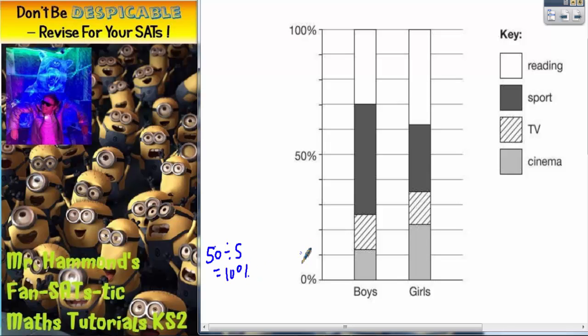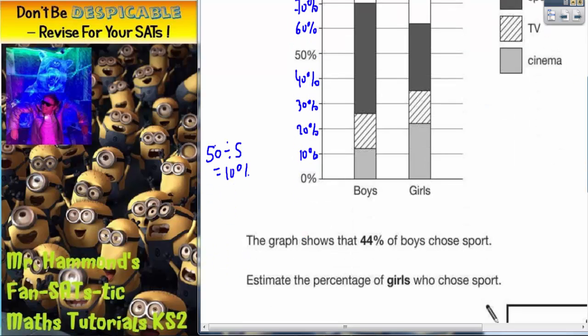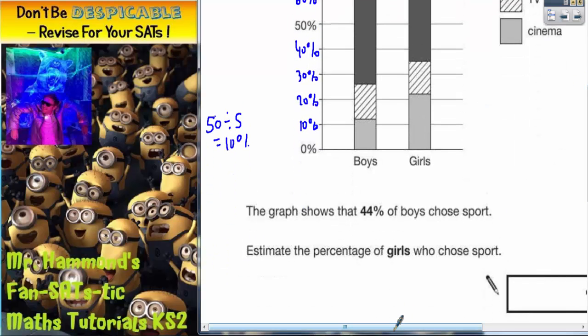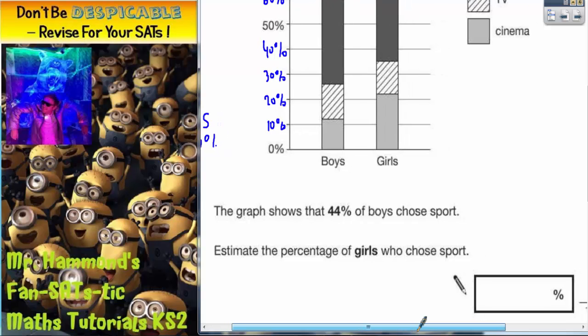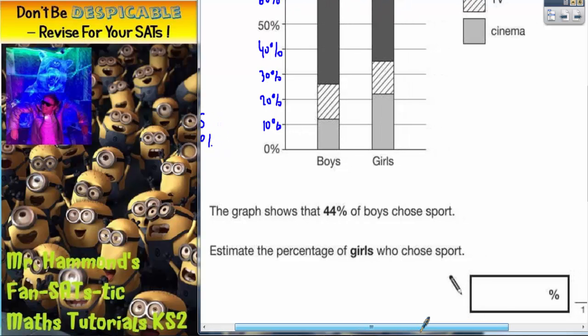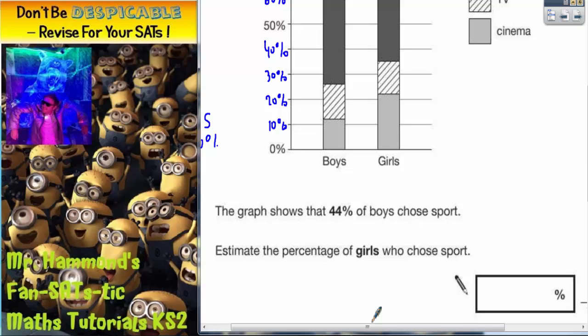So, the first gap must be 10%, then 20%, 30%, 40%. We've already got 50%, so then 60%, 70%, 80%, 90%, and 100%. Let's scroll down to see the question. It says, the graph shows that 44% of boys chose sport. Estimate the percentage of girls that chose sport.